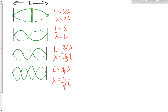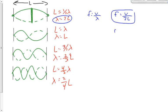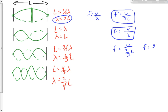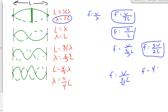Now let's apply the wave equation V equals F times lambda. Rearranging, F equals V over lambda. For the first harmonic, lambda is 2L, so F equals V over 2L. For the second, lambda is L, so F equals V over L, or equivalently 2V over 2L. For the third, lambda is two-thirds L, so F equals 3V over 2L. For the fourth, F equals 4V over 2L.